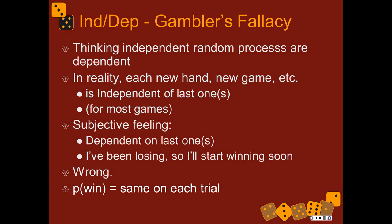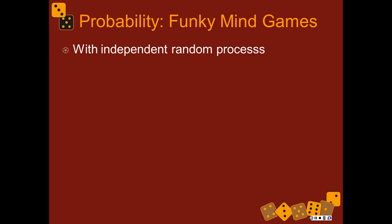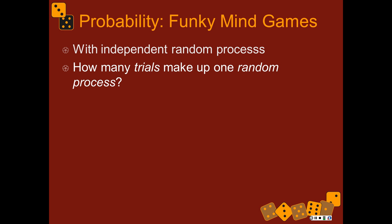The probability of winning is the same every trial — it resets every single time, but only for independent random processes. Probability can get really complicated. With independent random processes, you have to think about how many independent random processes you're considering to make up one big random process — how many trials make up one random process — because we can start clumping events together into complex events.